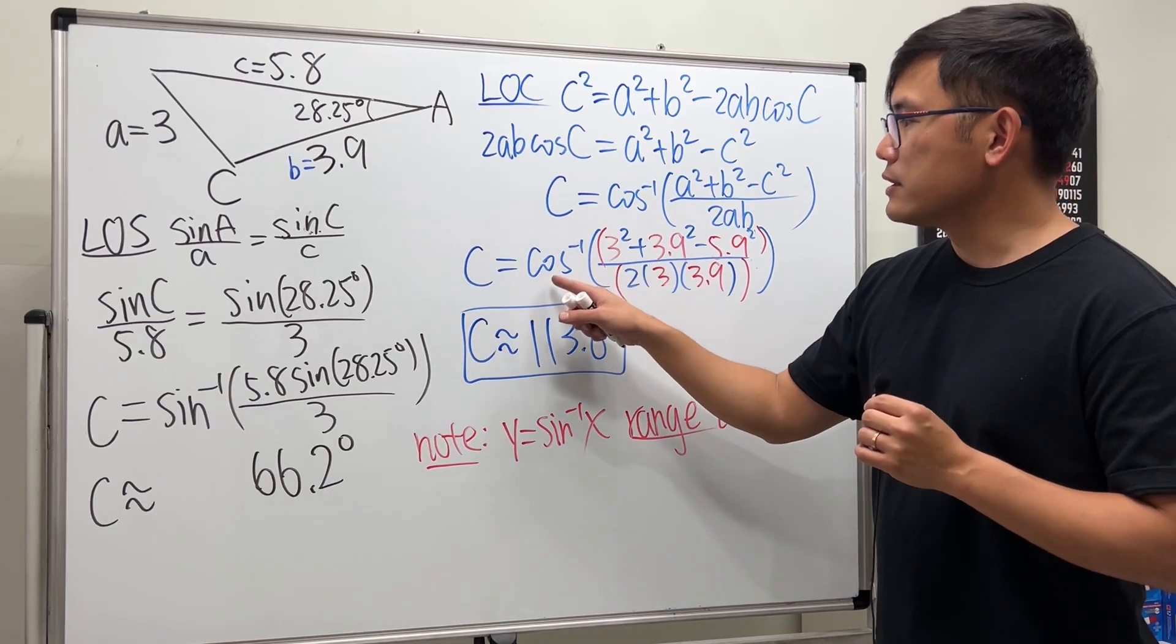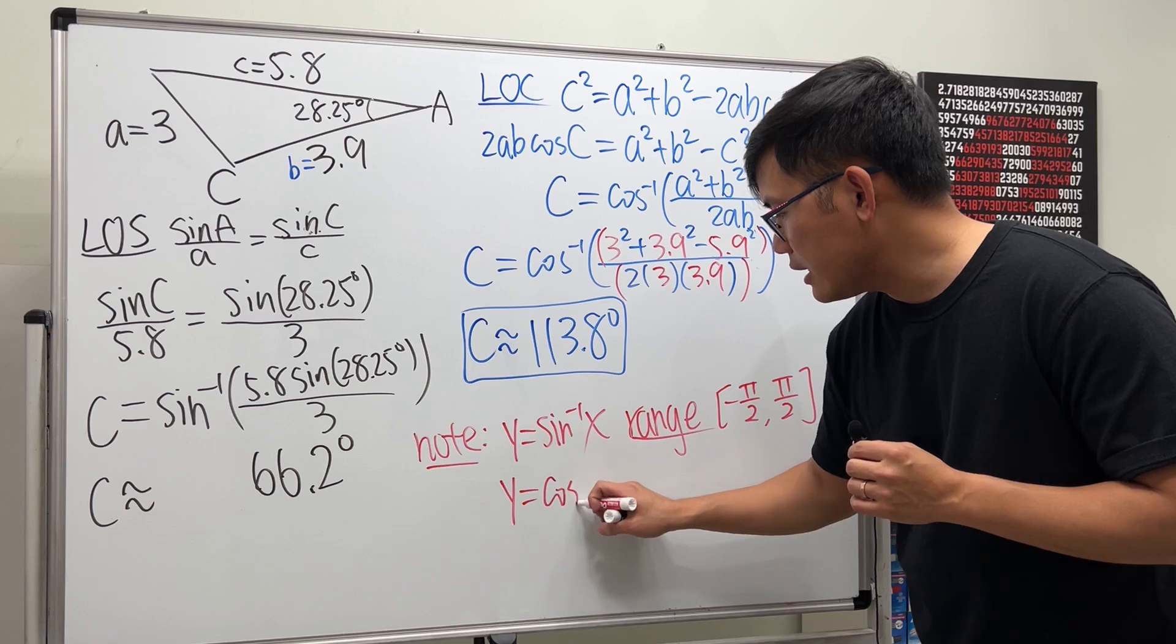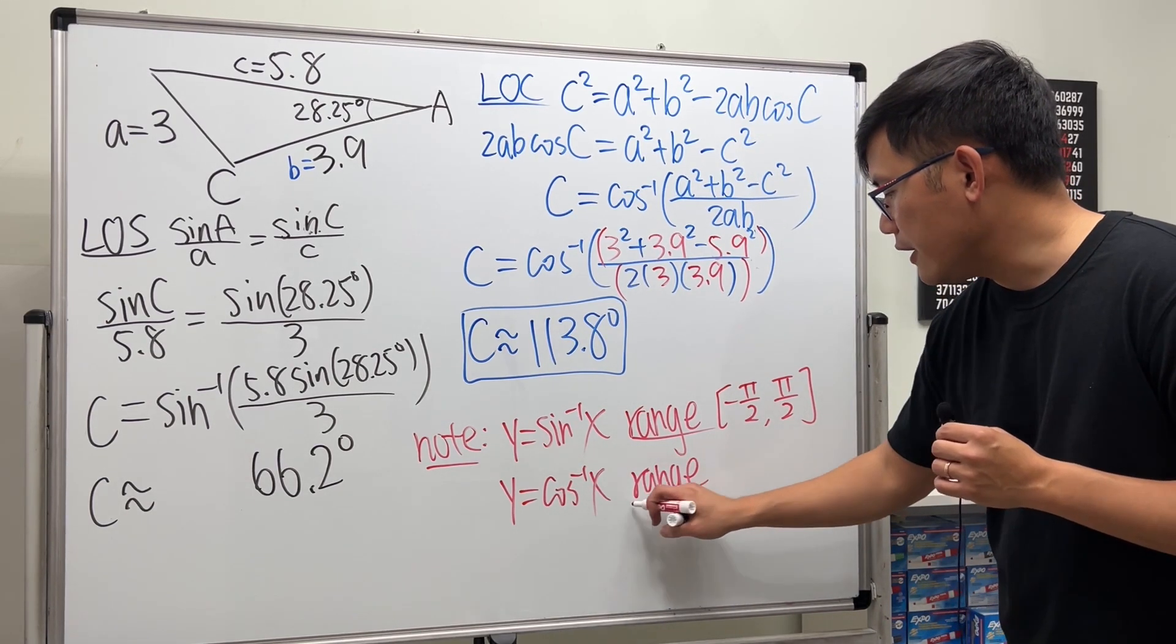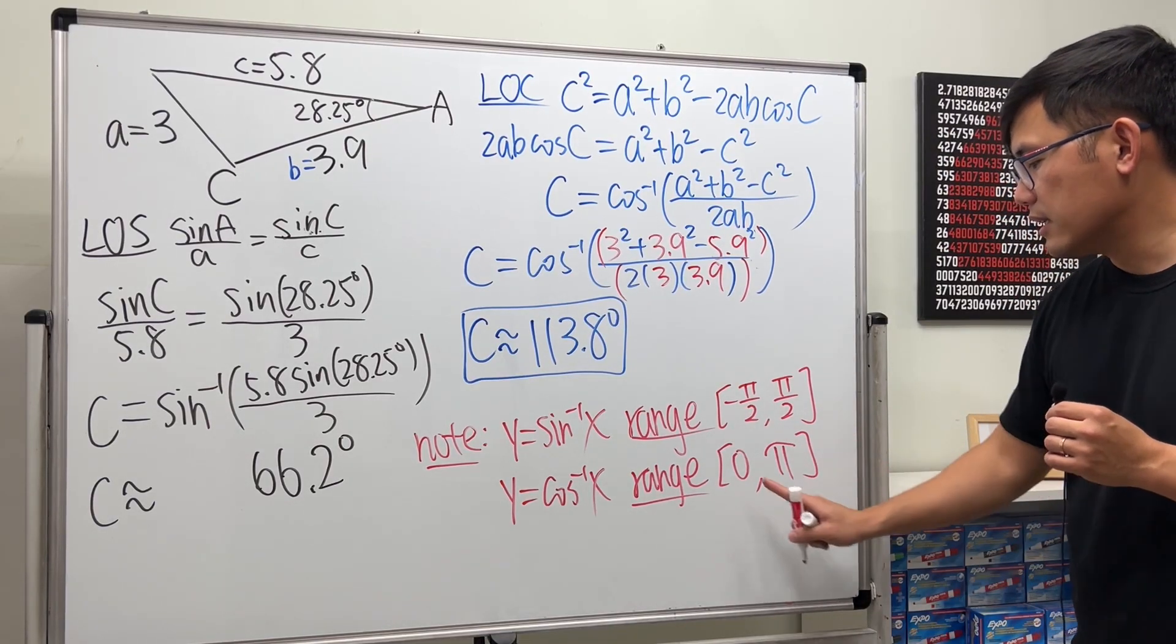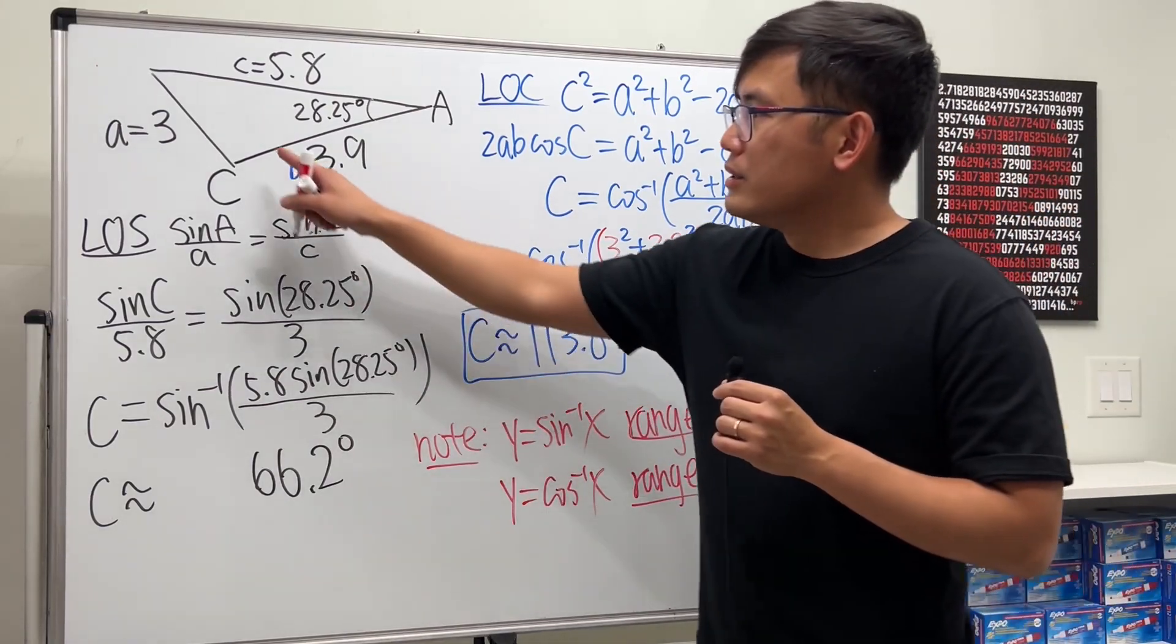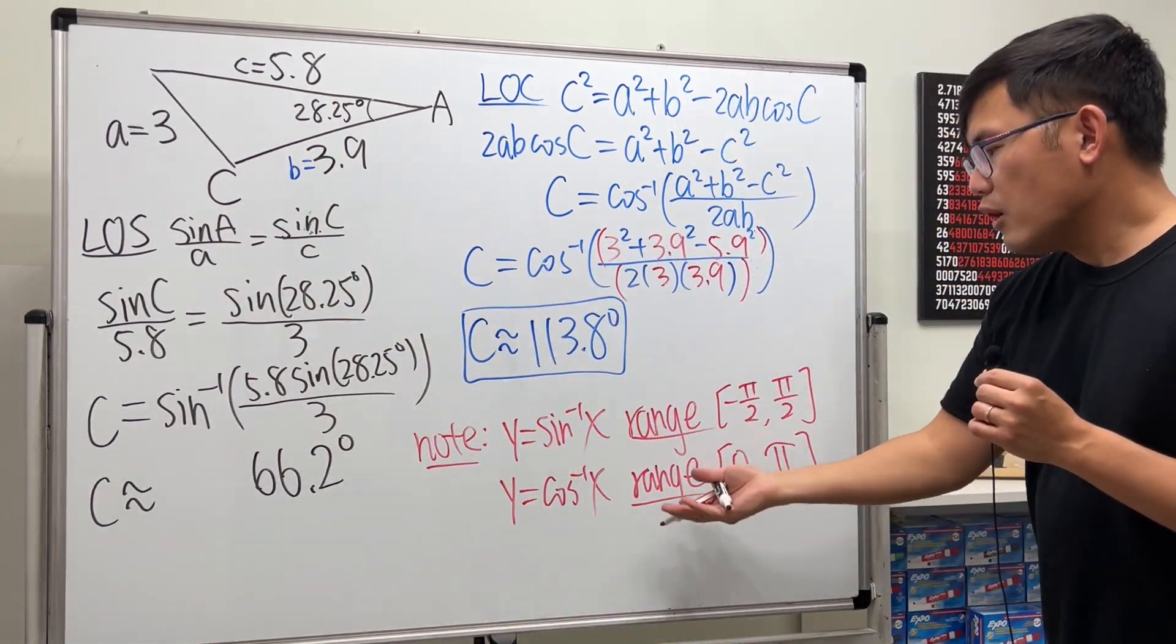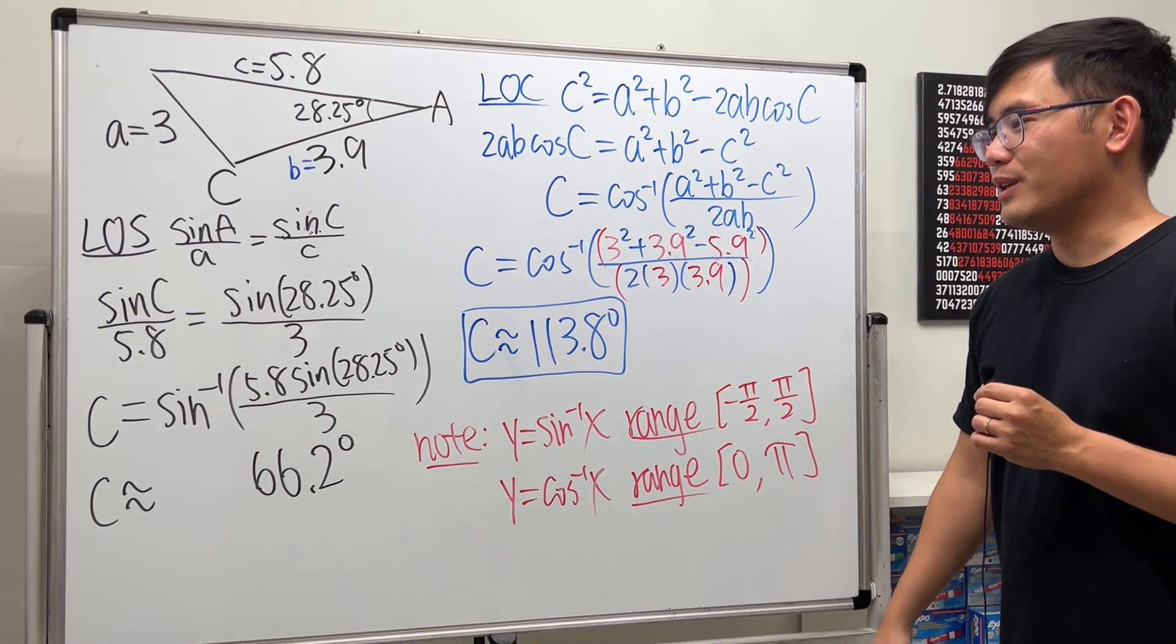As opposed to if we use the inverse cosine function, I will write that down right here as well. So, if we are looking at inverse cosine, then the range for this thing here, in fact, it goes from 0 to pi, and that is from 0 degrees to 180 degrees. So, if you are trying to look for an angle that is bigger than 90 degrees, then the law of cosine will give you the answer right away. Just like exactly what we did right here.